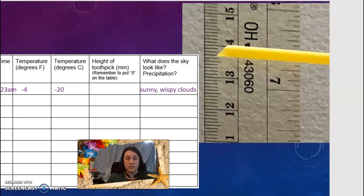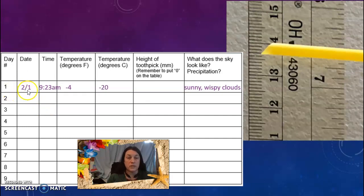When you have your measurements, you are going to look at your table that you need to fill out. Day number one, we're starting this on February 1st. I'm writing down the time that I am taking my measurement. I'm writing down the temperature in degrees Fahrenheit because that's what we're used to measuring in here in the United States.